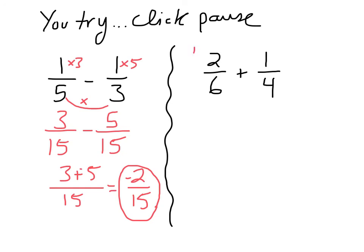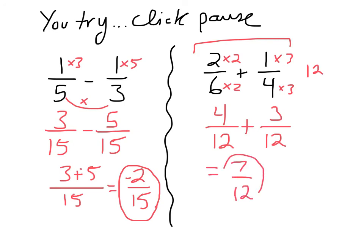The other problem is 2 sixths plus 1 fourth. So 6 and 4 can both become 12. The least common multiple of 6 and 4 is 12. So I'm going to rewrite each fraction with a denominator of 12. 6 times 2 is 12, so the numerator times 2 is 4. 4 times 3 is 12, so the numerator times 3 is 3. So it's 4 twelfths plus 3 twelfths, which is a total of 7 twelfths. 7 twelfths cannot be reduced, so it is also in lowest terms.